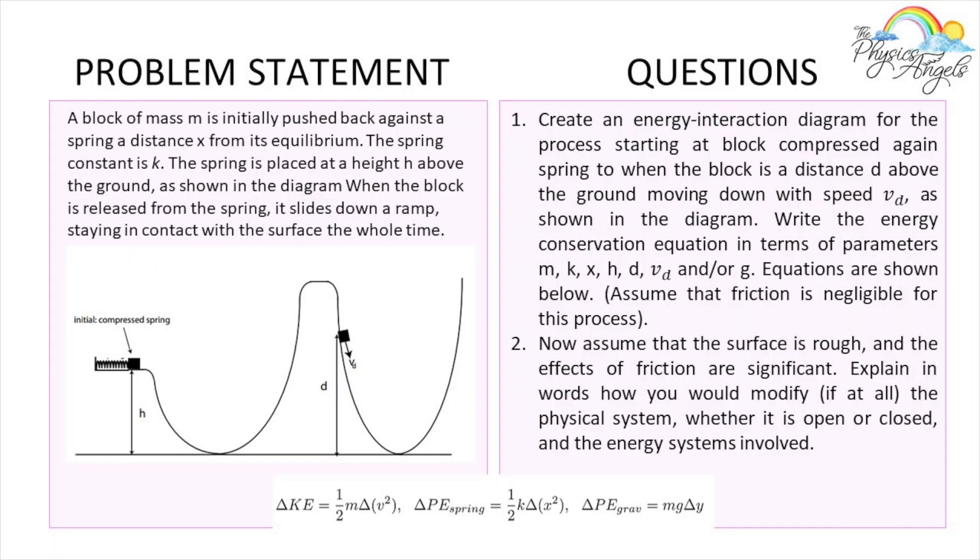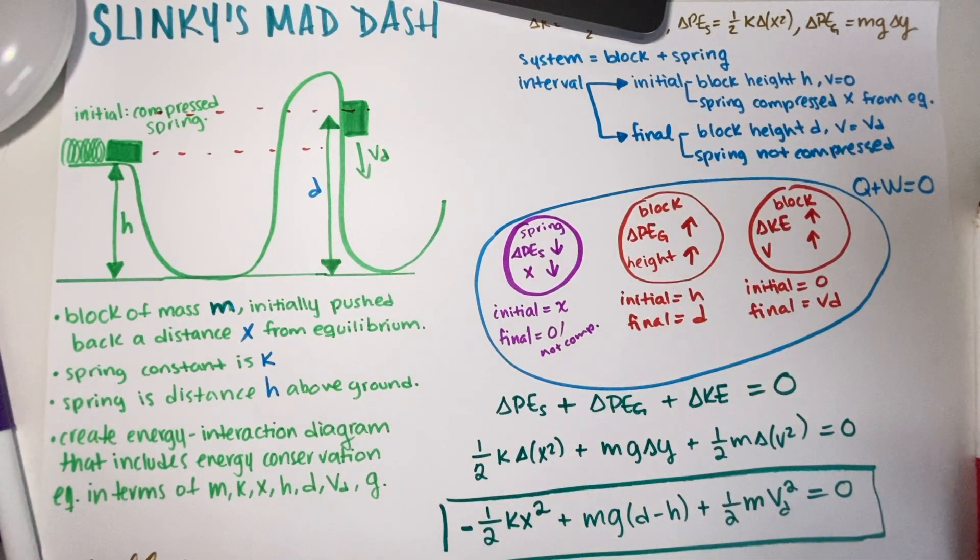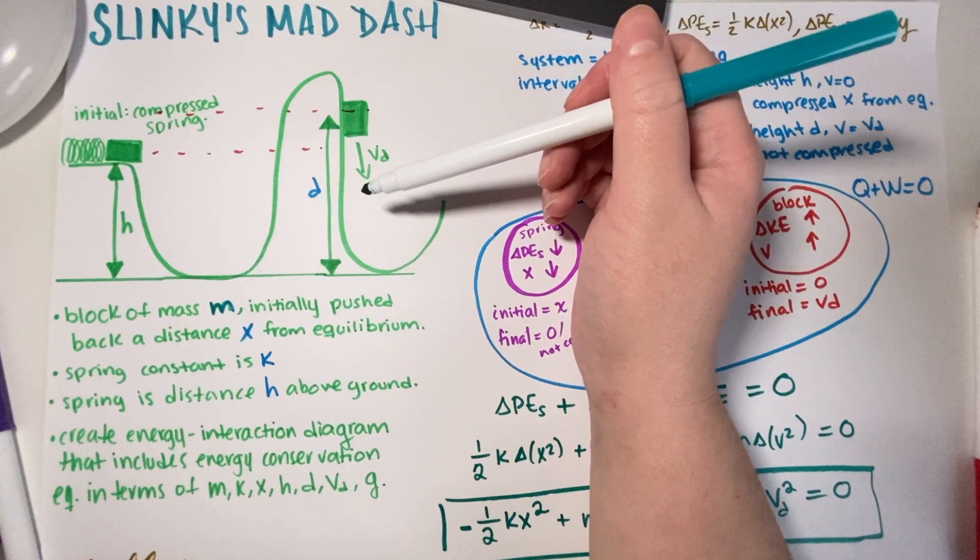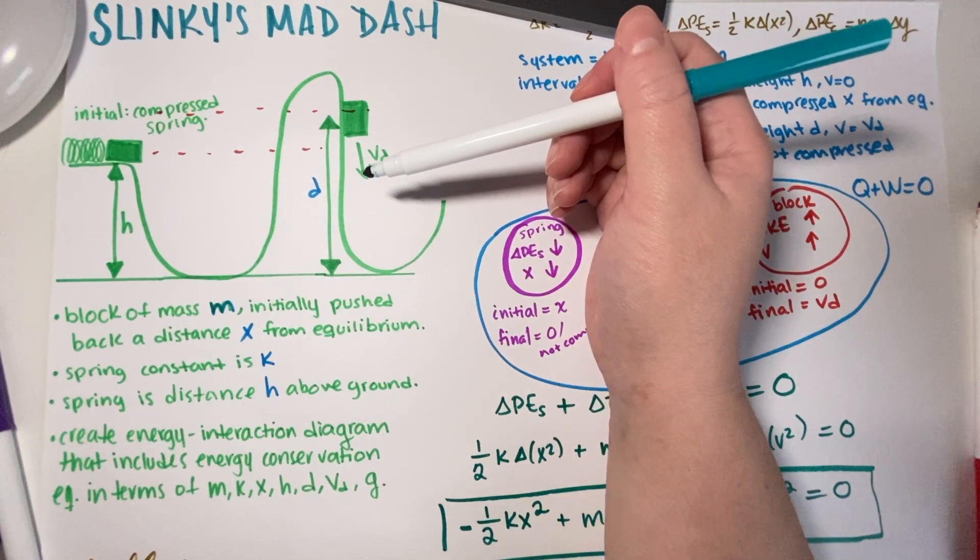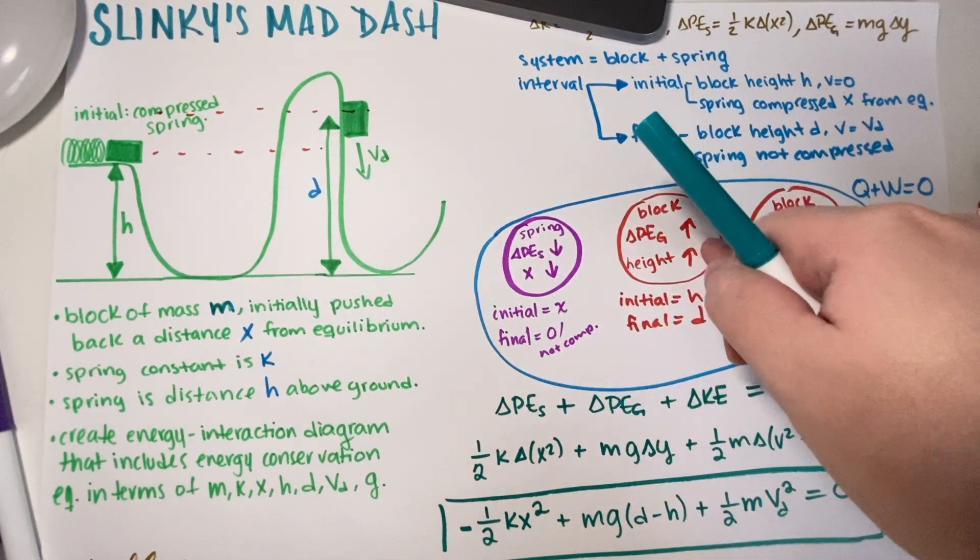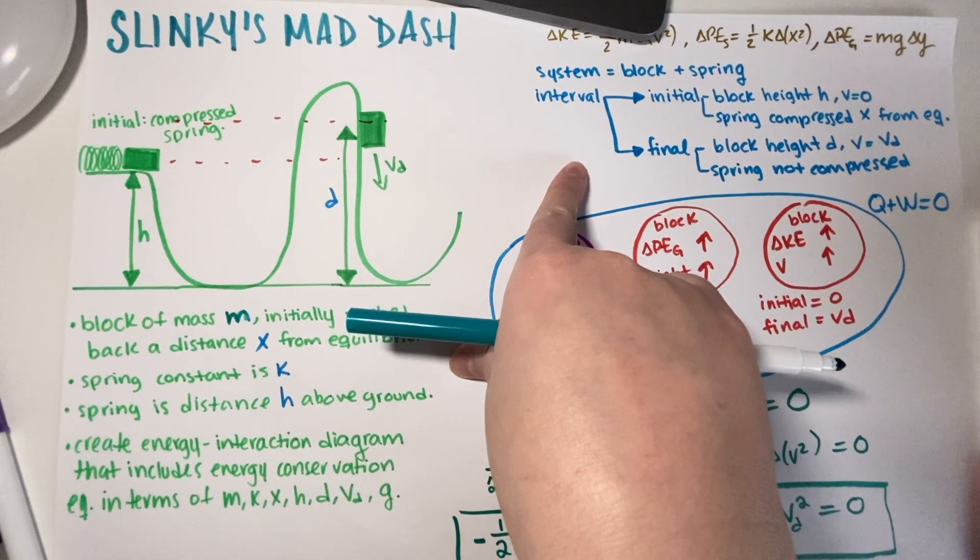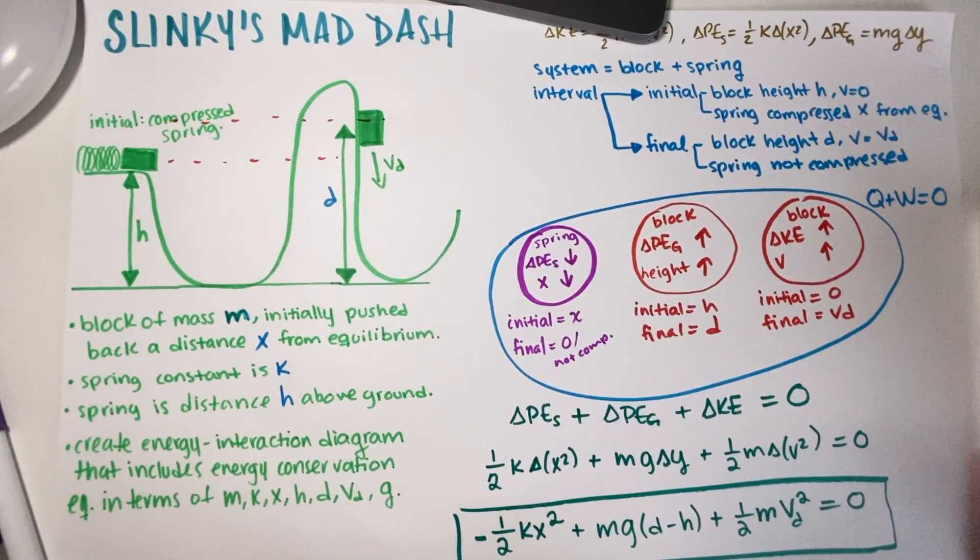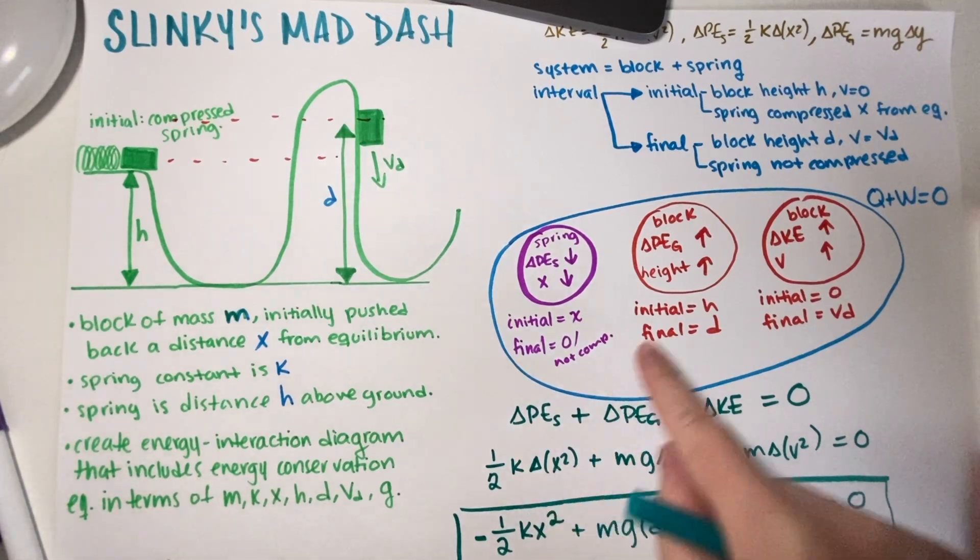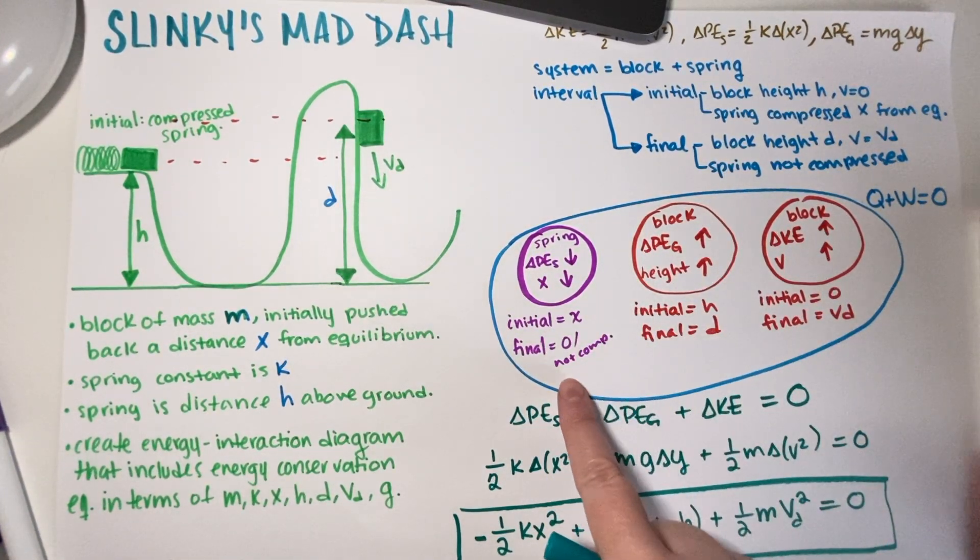So now let's move to part B of this problem. Part B says now assume that the surface is rough and the effects of friction are significant. Explain in words how you would modify, if at all, the physical system, whether it's open or closed and the energy systems involved. Okay, so basically on the first part of the problem, there is no friction, so there is no heat. Now there are several ways in which you can modify this in order to accommodate friction. But I'm going to go ahead and go with what I would answer, which is also what I'm pretty sure a 7a student would answer firsthand, which is that instead of having a closed system because there is no friction, I would have an open system.